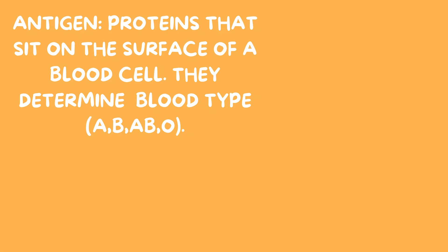First and foremost, we must understand two important vocabulary words associated with blood types. The first word is antigen. Antigens are proteins that rest on the surface of our red blood cells, and they are what determine our blood type.